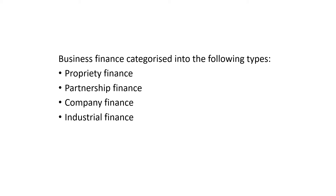The last type is industrial finance. This term is mainly used to refer to finance supplied by lending organizations — for example, financial institutions like IFCI, IDBI, ICICI, etc. — to various private and public sector units. Industrial finance also includes provisions of funds by other institutional agencies like LIC, UTI and all commercial banks.